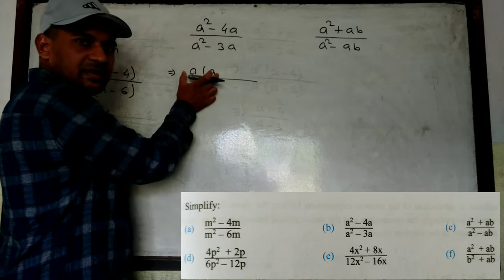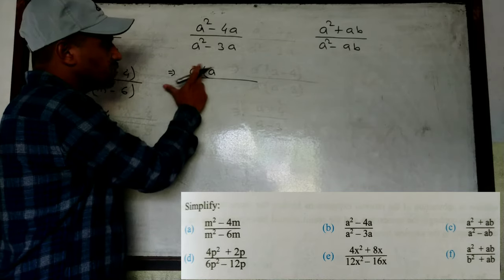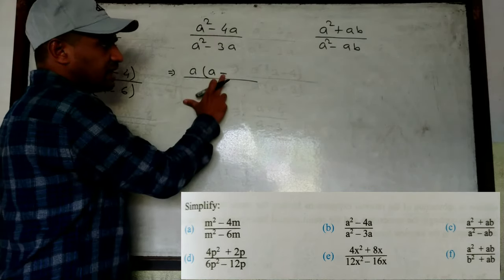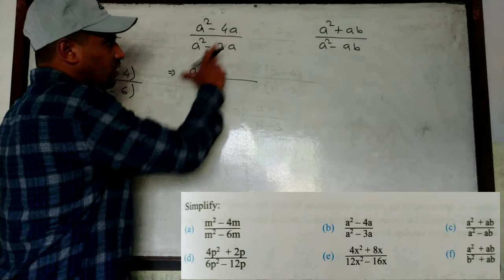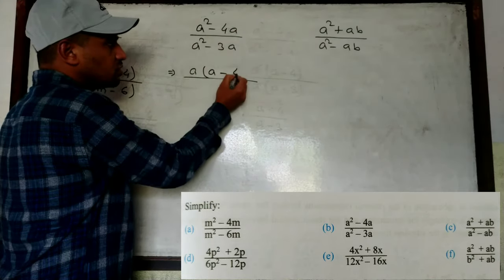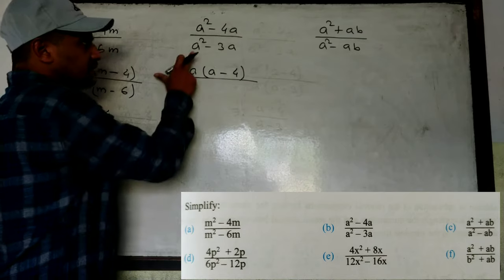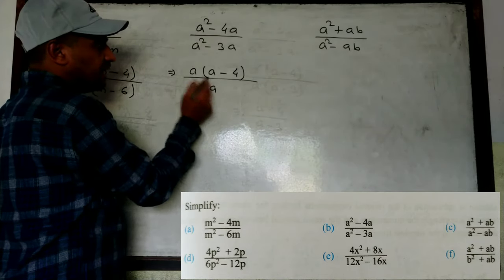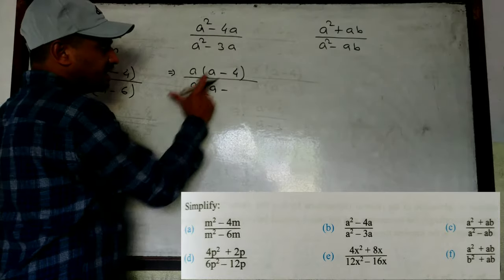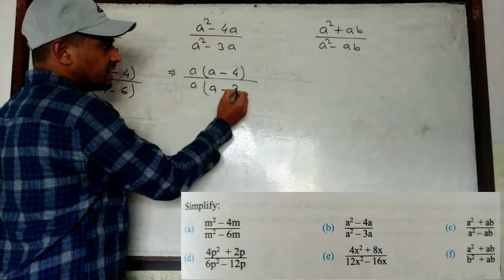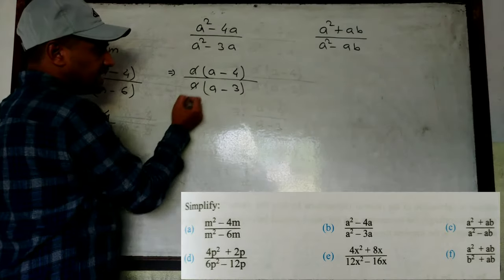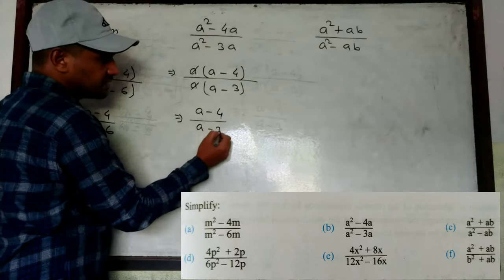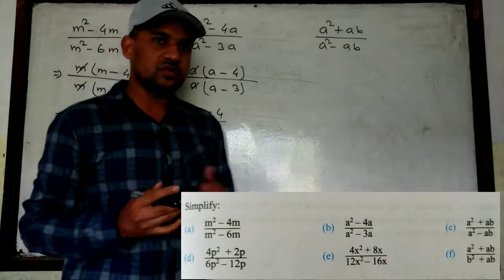Base same, and in multiplication we add the powers: 1 + 1 = 2. Minus, so we write minus 4. a is already common, so remaining is 4. Similarly, a² - 3a: common is a, remaining is a. a is already common, so remaining is 3. We write 3. a and a cancel, so remaining is a - 4 by a - 3. Hope you understand these questions.